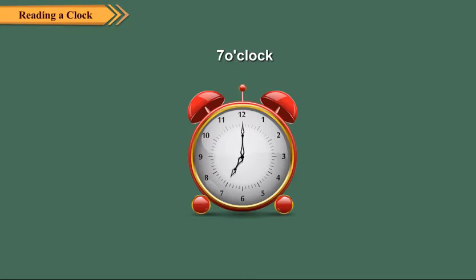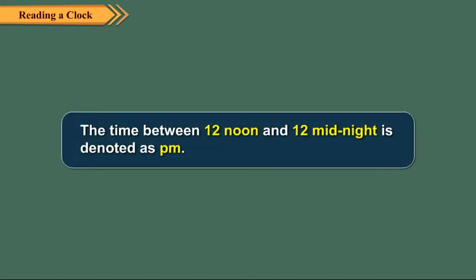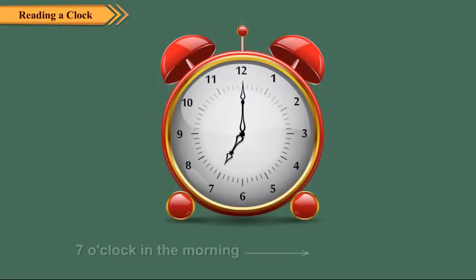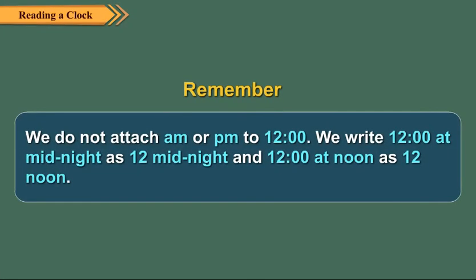When we say that it is 7 o'clock, it may be 7 o'clock early in the morning or 7 o'clock in the evening. To avoid this confusion, we use AM and PM notations. The time between 12 midnight and 12 noon is denoted as AM. The time between 12 noon and 12 midnight is denoted as PM. For example, 7 o'clock in the morning is denoted as 7 AM. Similarly, 5:30 in the evening is denoted as 5:30 PM. Remember, we do not attach AM or PM to 12. We write 12 at midnight as '12 midnight' and 12 at noon as '12 noon.'